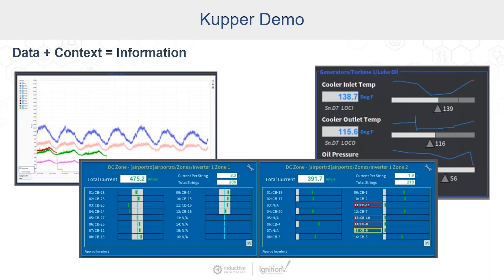These are each templates composed of other templates to minimize setup time. Finally, we have a solar combiner box monitor on the bottom, which highlights inputs that are underproducing with a circle. It visually shows the average input current against each input's value, and the acceptable deviation range is also shown as a gray band.